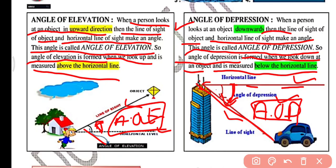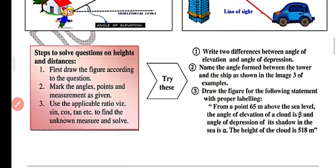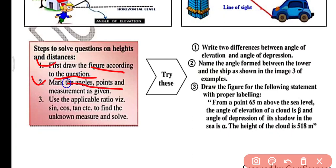Keep in mind: angle of elevation is formed when we look up, and angle of depression is formed when we look down. Now, steps to solve questions on height and distances: first, draw a figure according to the question; then mark the angles, points, and measurements as given. Use the appropriate trigonometric ratios — sine, cos, tan, cot, secant, and cosecant — to find the unknown measures and solve.